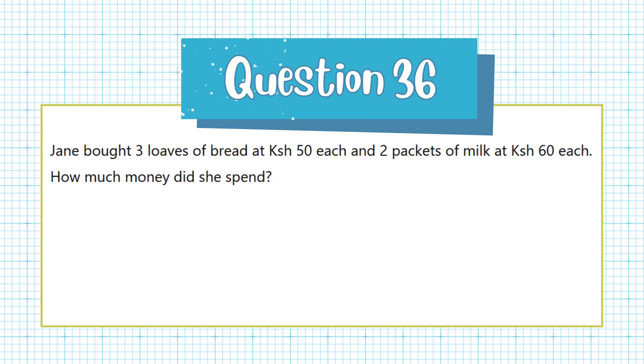Question 36. Jane bought 3 loaves of bread at 50 Kenyan shillings each and 2 packets of milk at 60 Kenyan shillings each. How much money did she spend?